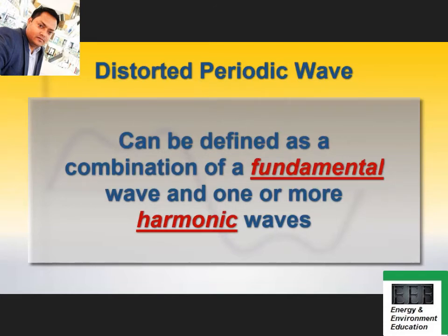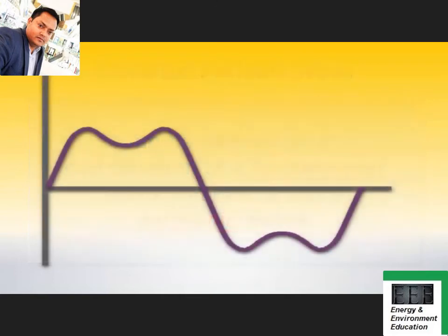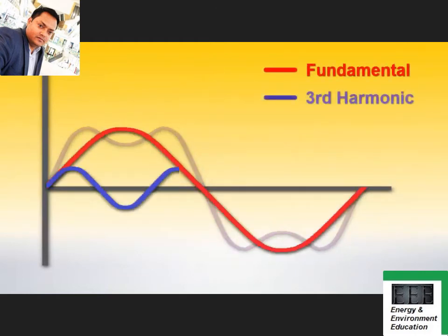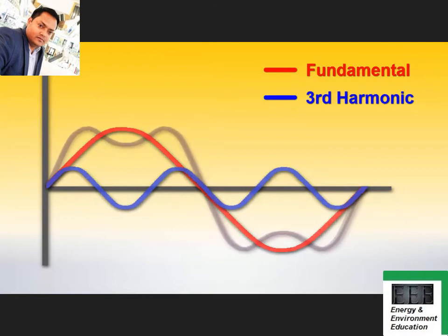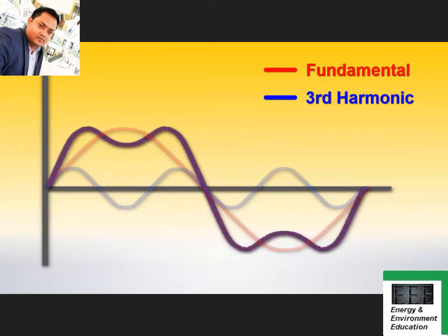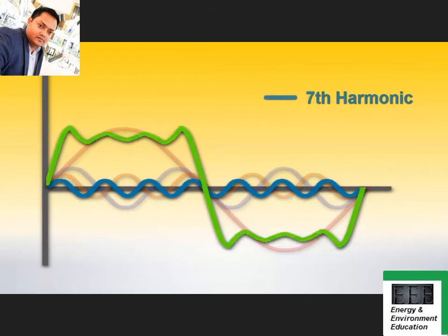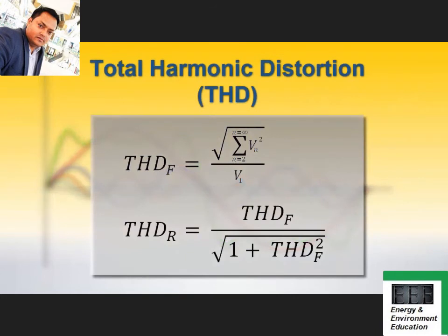A periodic wave, no matter how distorted, can be defined as the composite of a single primary or fundamental wave and one or more harmonic waves of varying wavelengths. For example, a wave can be deconstructed into a fundamental wave and a harmonic wave whose wavelength is one-third of the fundamental — called the third harmonic. The combination of the fundamental and the third harmonic produces a distorted waveform; adding additional harmonics results in further distortion.